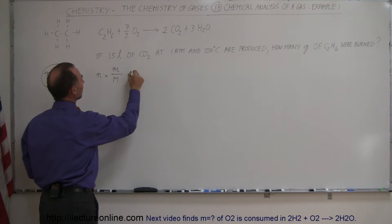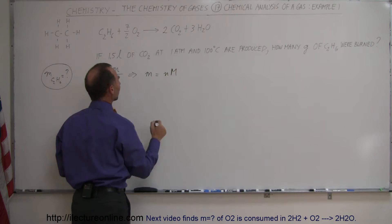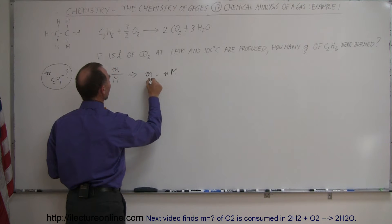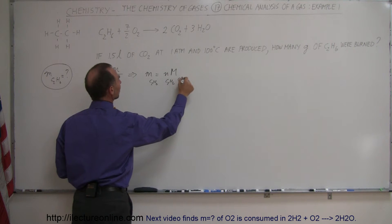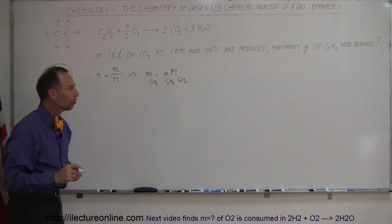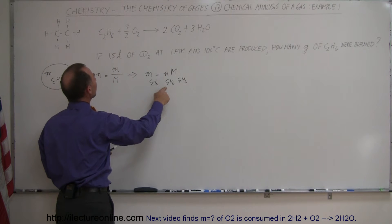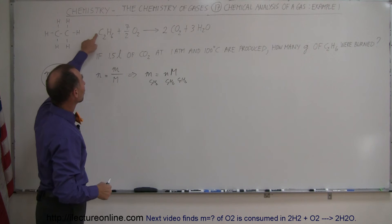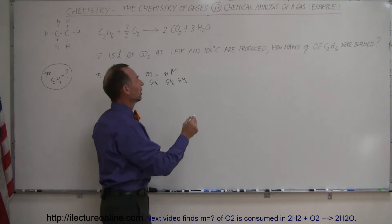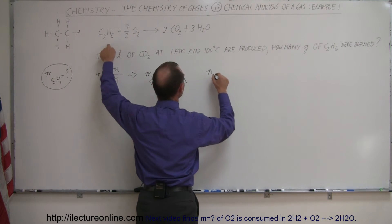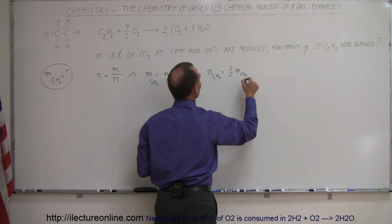We can rewrite that equation saying the mass of the gas is equal to the number of moles times the molar mass. So for ethane, C2H6, that would be the number of moles of C2H6 times the molar mass of C2H6. Now we need to find out how many moles of the gas were used up, which is somehow related to the number of moles of carbon dioxide we end up with. Notice that for every one mole of ethane burned, we ended up with two moles of carbon dioxide gas. So the number of moles of C2H6 is equal to one half the number of moles of CO2.